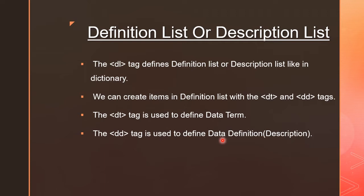The DD tag is used to define data definition — that is, the description or meaning. So the meaning of the word written in the DT tag goes inside the DD tag. For example, I wrote 'joyful' in DT, and I will write 'very happy' in DD. So the output will show: Joyful — very happy.